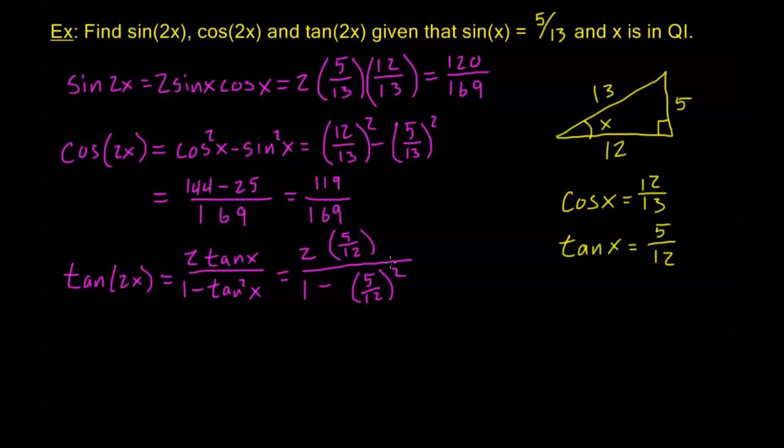We can simplify that out to get the answer, but this is a bit complicated. There's a better way to find tangent if we already have sine and cosine. Anytime you need to find tangent alone, use this formula. But if you have to find sine, cosine, and tangent, once you have sine and cosine, all you need to do is remember that tangent of 2x equals sine of 2x over cosine of 2x.